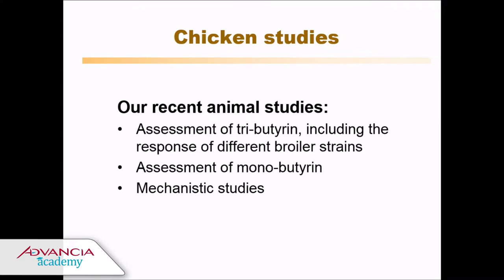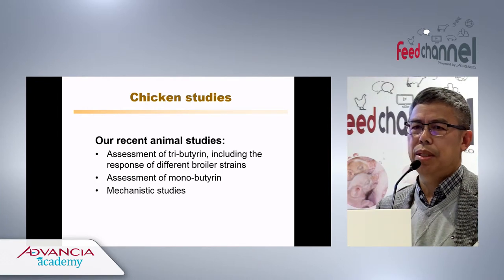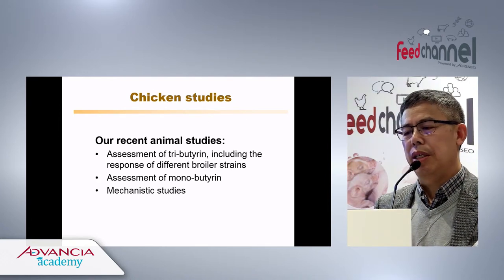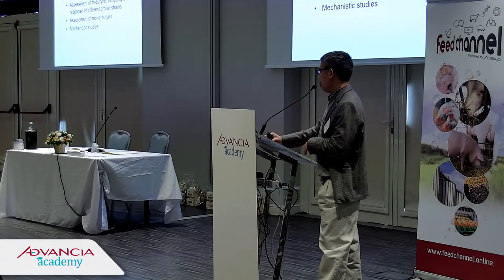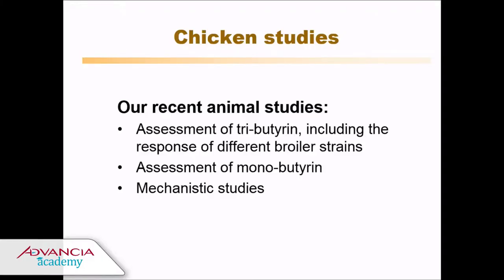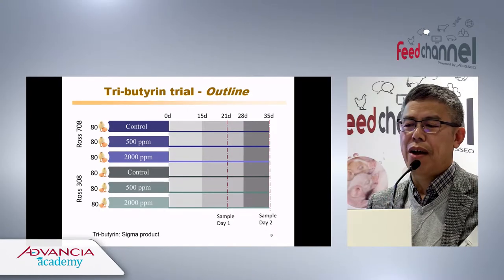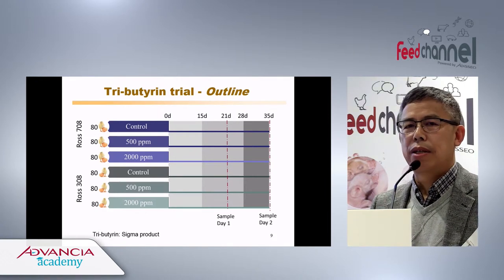To follow up, we conducted animal trials. There are two different forms of butyrate glycoside: tributyrin, where glycerol has three butyrate molecules, and monobutyrin, which has one butyrate on the glycerol. In the first trial, we studied the effect of tributyrin on broiler production using two strains — Ross 308 and Ross 708 — over five weeks, with samples taken at day 21 and at the end of the trial.